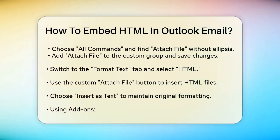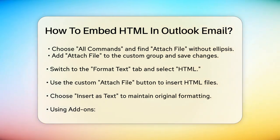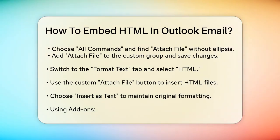Once you've added this button, you can use it to insert HTML files. Switch to the format text tab and select HTML to ensure your email supports HTML code. Click the custom attach file button, select your HTML file, and choose the insert as text option from the drop-down next to the insert button.